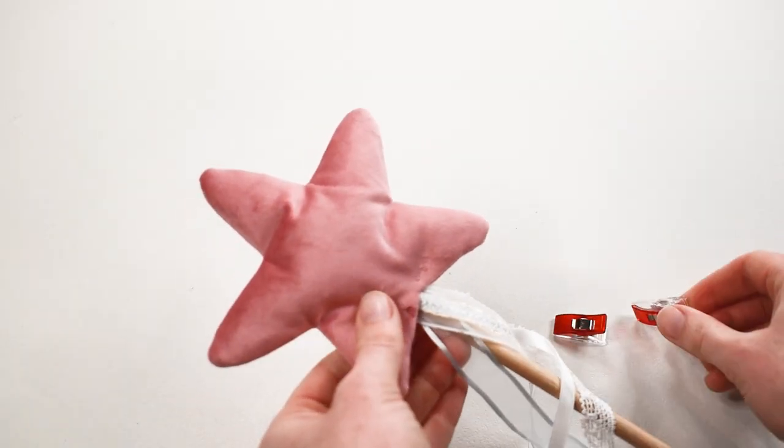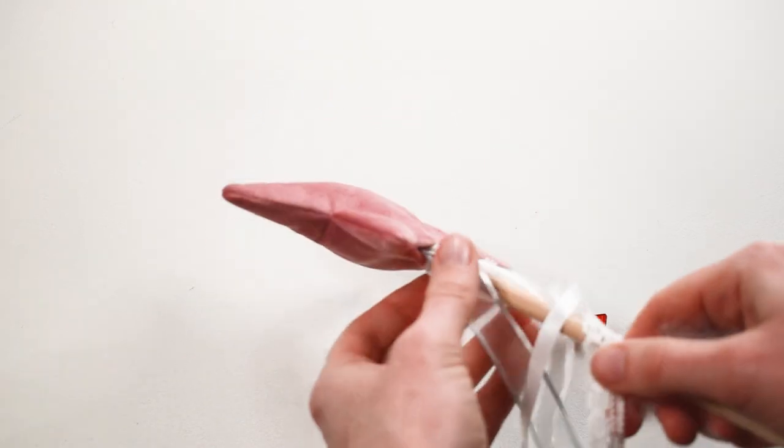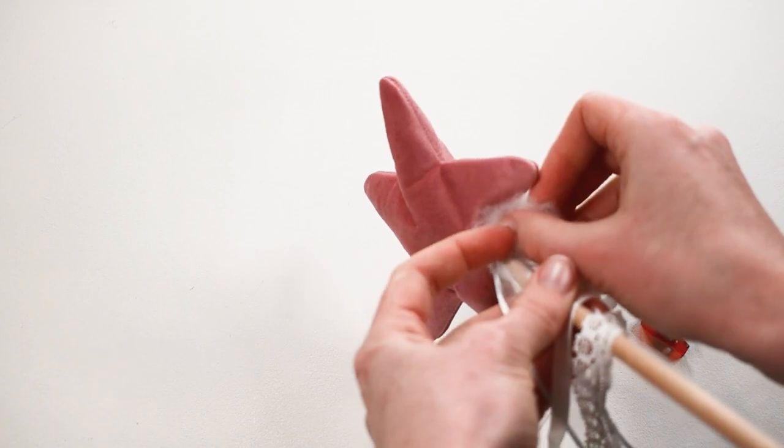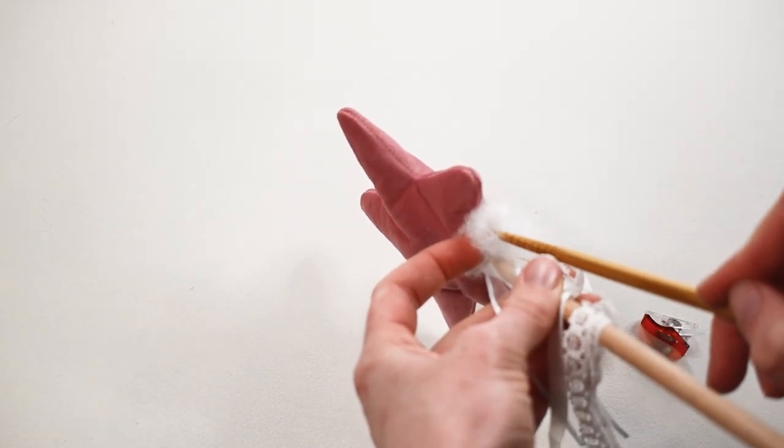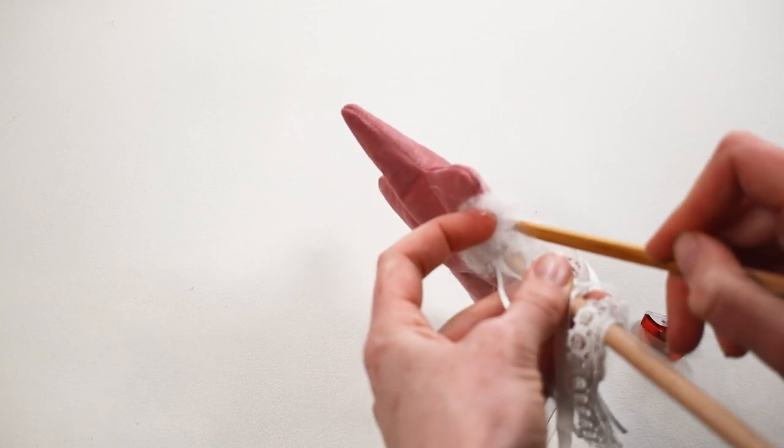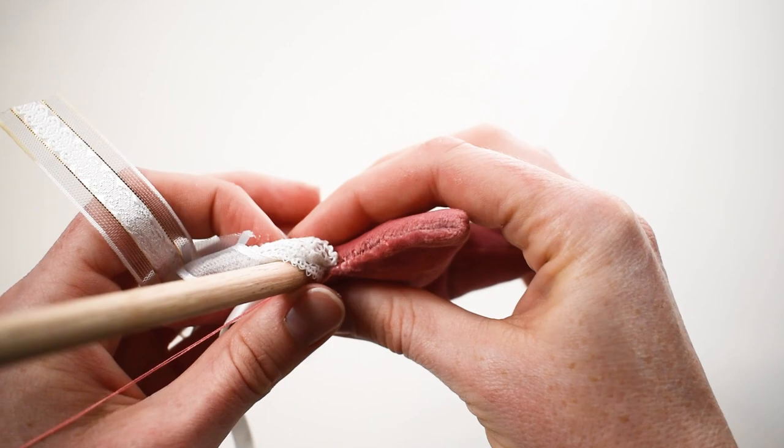Once dry, remove the clips and add any more stuffing if your star is lacking. Mine was a little bit floppy down the bottom. Then either ladder stitch or glue the opening shut on either side.